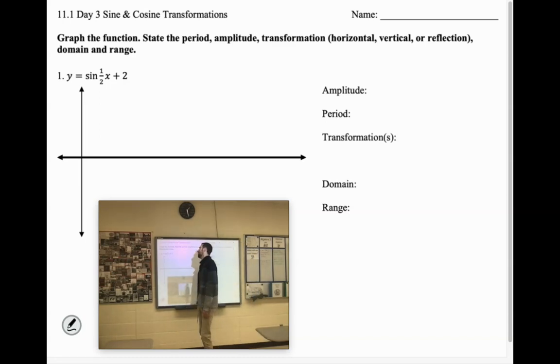All right, sine one half x plus two. First of all, the amplitude always comes from right in front of the sine or cosine, which in our case there's an invisible one.